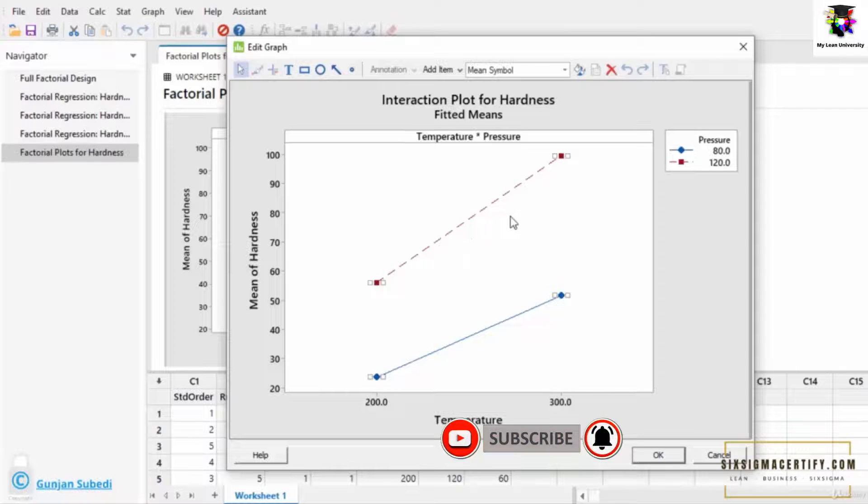The summary of the interaction plot is, if the two lines of the factors are parallel to each other, then there is no interaction. If the lines are not parallel but they are not intersecting each other, then we must say that there is some interaction.